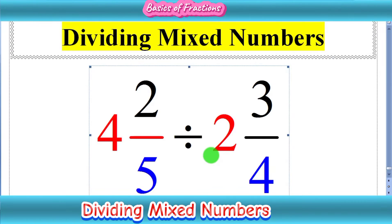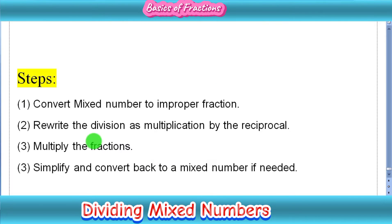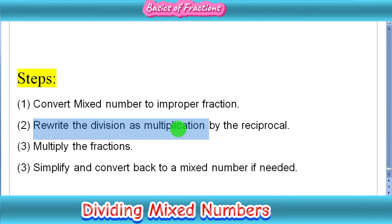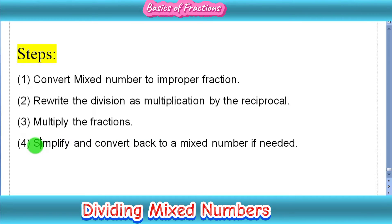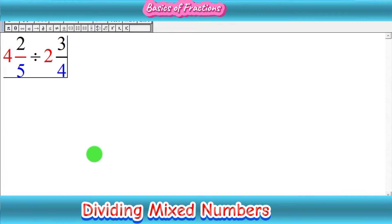Before starting the solution, we revise the steps on how to solve it. In the first step, we have to convert all mixed numbers into improper fractions. In the second step, we rewrite the division as multiplication by the reciprocal. In the third step, we can multiply fractions straight across or cancel common factors. In the last step, we simplify and convert back to a mixed number if needed.